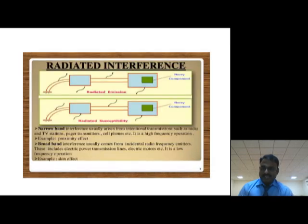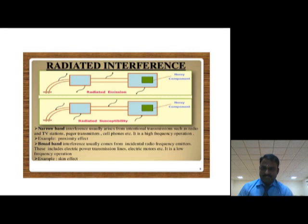We have a general system diagram here which is connected with the power card, and it has two different subsystems. A system is nothing but the combination of subsystems. If any noisy component is present in a subsystem, the entire system becomes affected — the noisy component acts as the interference source for the entire system. This first diagram shows two subsystems forming a complete system connected to the power card.